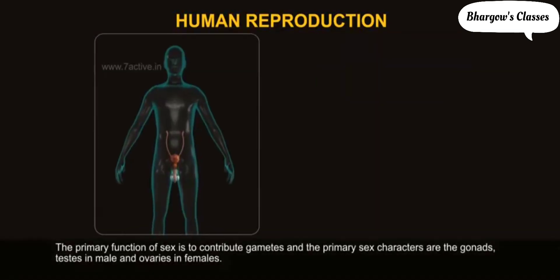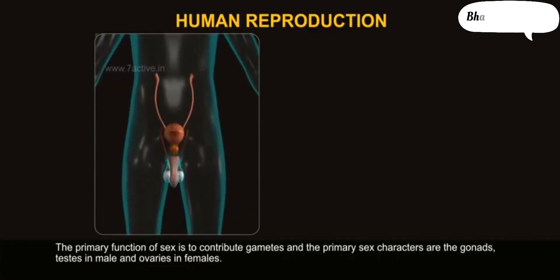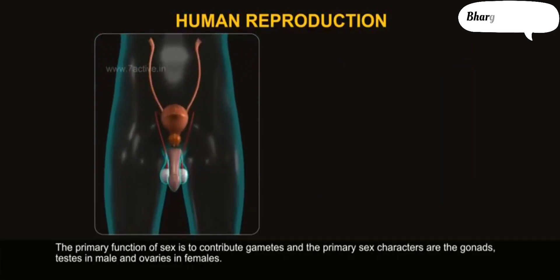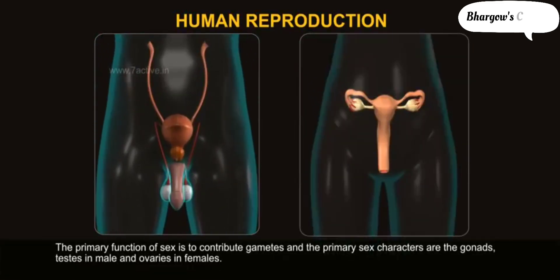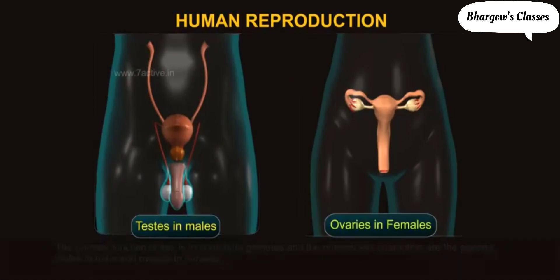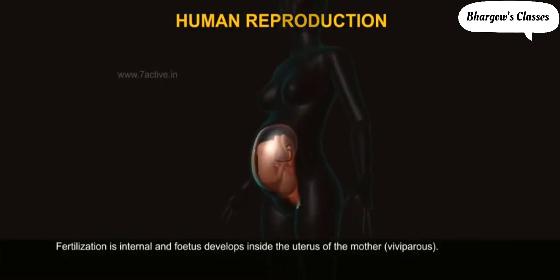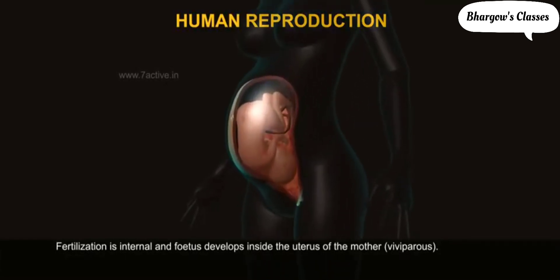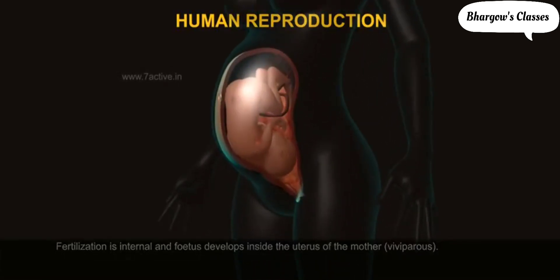The primary function of sex is to contribute gametes, and the primary sex characters are the gonads — testes in males and ovaries in females. Fertilization is internal and the fetus develops inside the uterus of the mother, making humans viviparous.